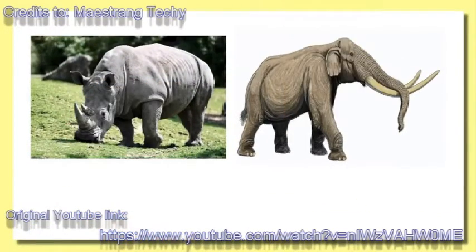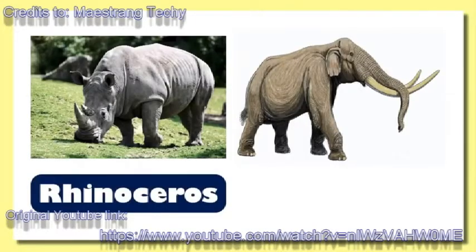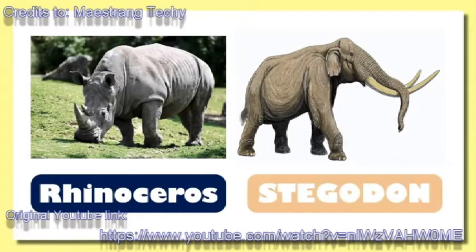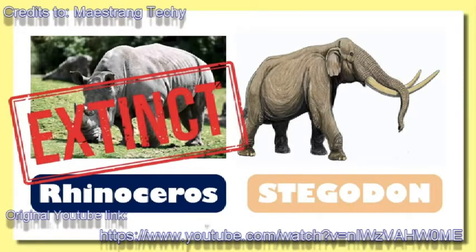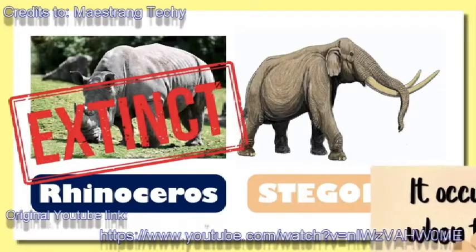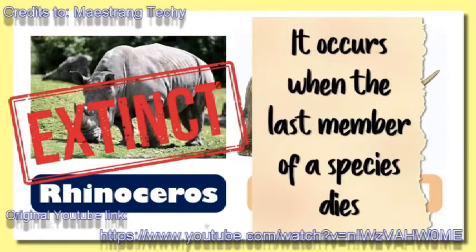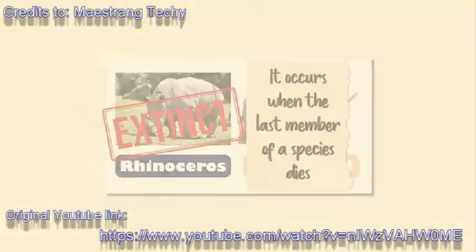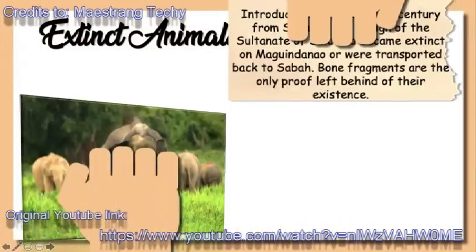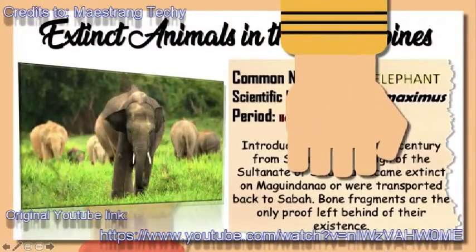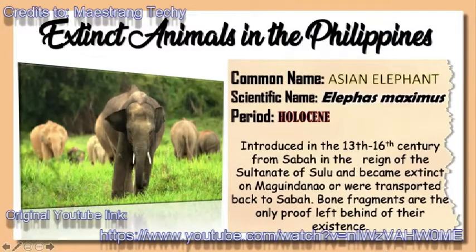Do you know these kinds of animals? The first one is the Philippine rhinoceros. The second one is what we call Stegodon. These animals are considered extinct. Extinction occurs when the last member of a species dies. Here are some of the extinct animals in the Philippines. Take note of the following so you can answer your learning task.